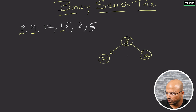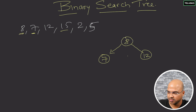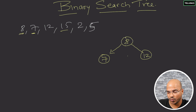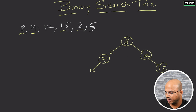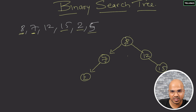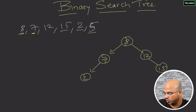You can't add another node directly at root level in a binary tree, so you travel. Since 15 is bigger than 8, it goes right — but we already have 12 there. Since 15 is bigger than 12, it goes on the right of 12. Next, 2 is smaller than 8, so we start from root, go to 7, and since 2 is smaller than 7 it goes on the left of 7. For 5: smaller than 8, smaller than 7, greater than 2, so it goes on the right of 2. That's how the binary search tree works.